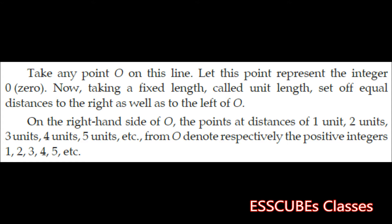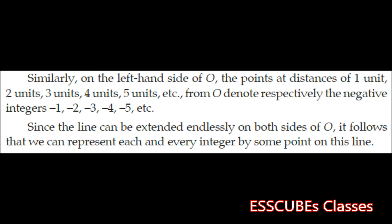Taking a fixed length called unit length, set equal distances to the right as well as to the left of O. On the right hand side of O, the points at distances of 1 unit, 2 units, 3 units and so on from O denote respectively the positive integers 1, 2, 3, 4, etc. Similarly, on the left hand side, the points at distances 1 unit, 2 units, 3 units represent the negative integers minus 1, minus 2, minus 3. Since the line can be extended endlessly on both sides of O, we can represent each and every integer by some point on this line.